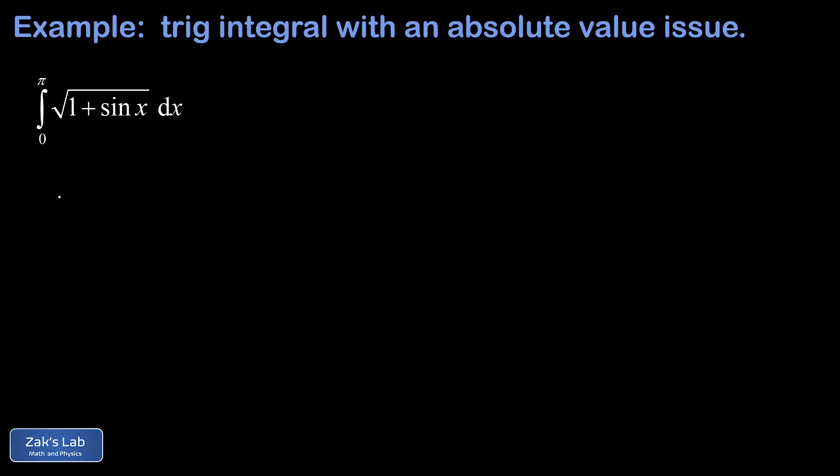We're going to multiply the numerator and denominator by the conjugate of that interior. The point of that is to intentionally build a difference of two squares, which then opens up a trig identity approach.